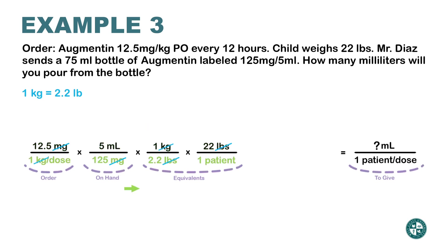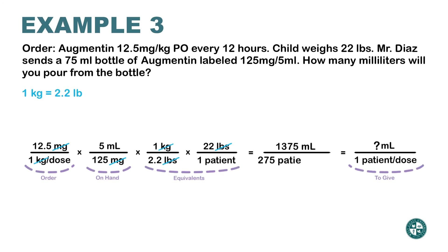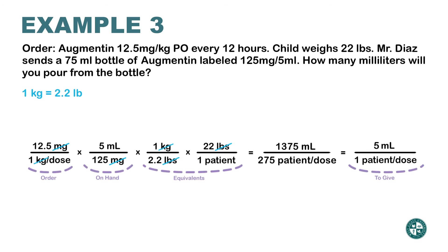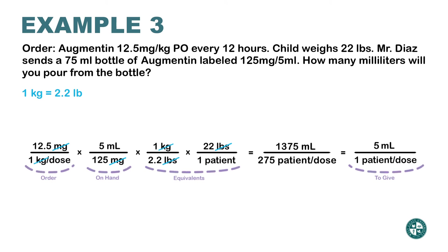Now I'm ready to multiply top by top, bottom by bottom. So 12.5 times 5 times 1 times 22 gives the numerator; 1 times 125 times 2.2 times 1 gives the denominator. Dividing those two gives 5 milliliters per patient per dose. If you notice, I was using the same basic idea throughout — multiplying by fractions and setting up each fraction to cross-cancel the units I don't want, leaving the units I do want.